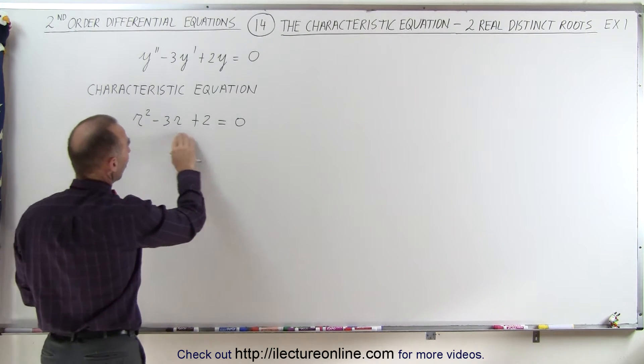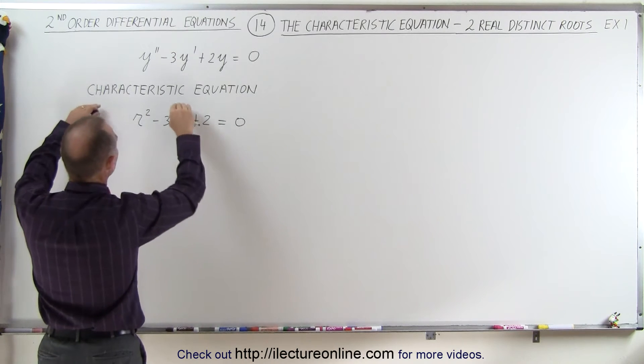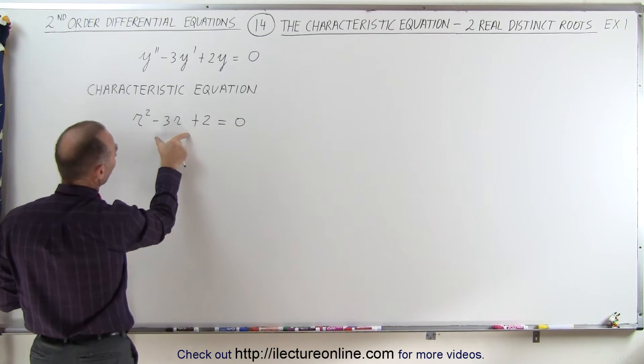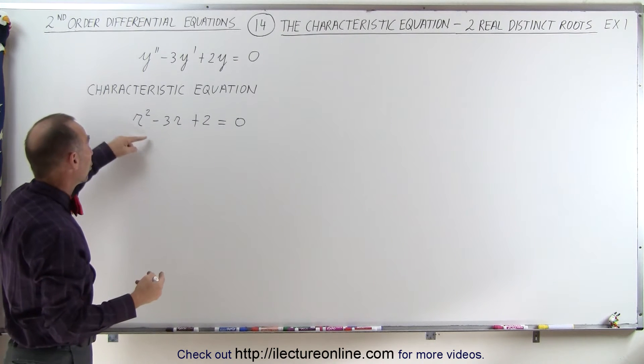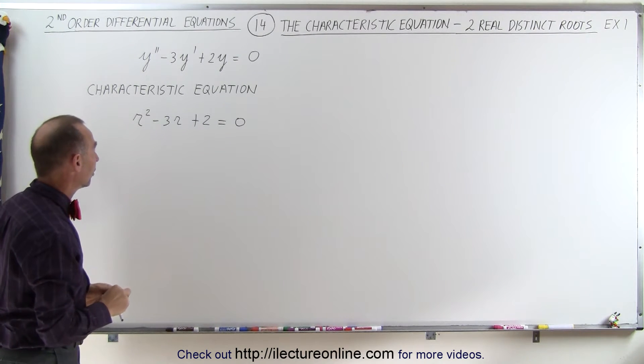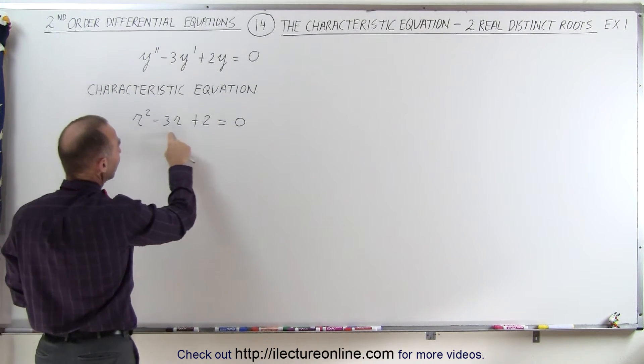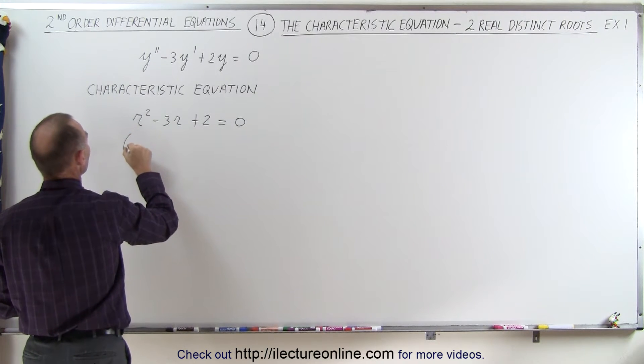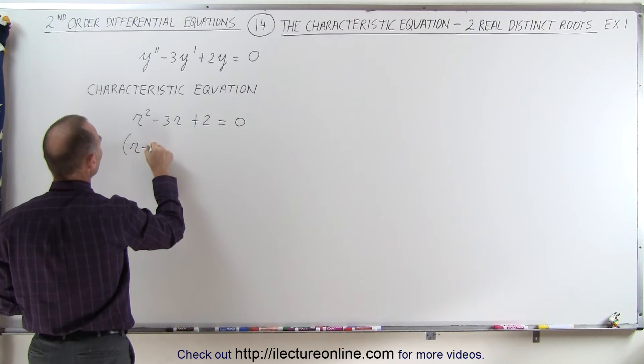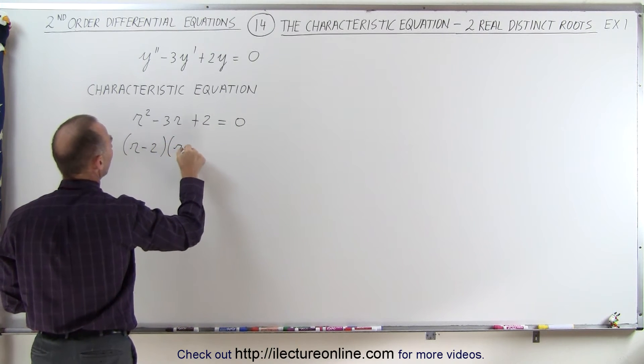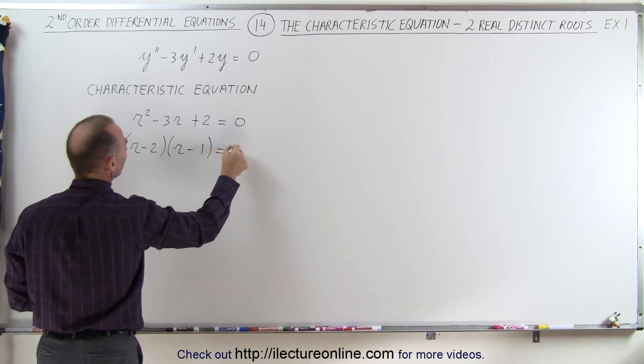Now what we do is solve this characteristic equation. We're going to solve for the roots, just like we solve a quadratic equation. You can see we can easily factor this. This can be written as (r - 2)(r - 1) = 0.